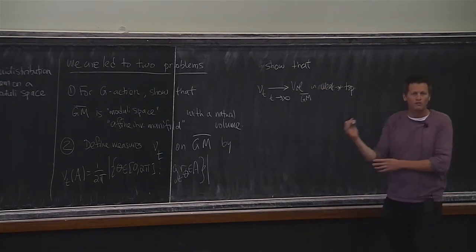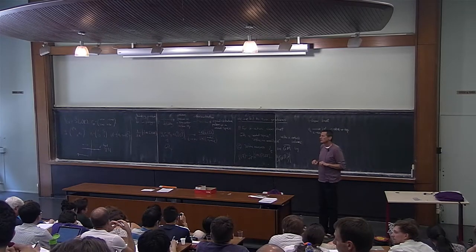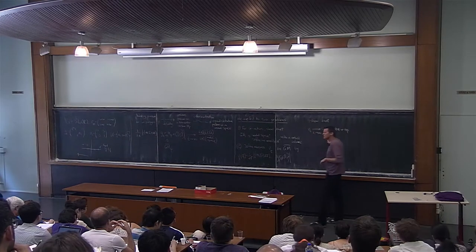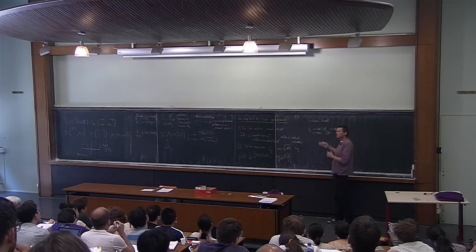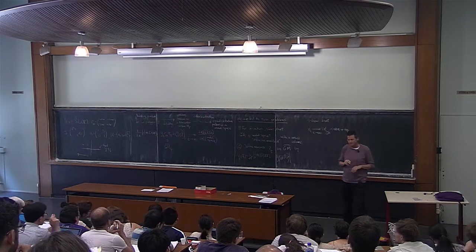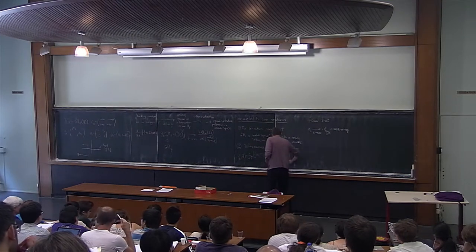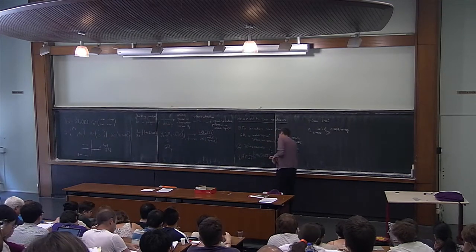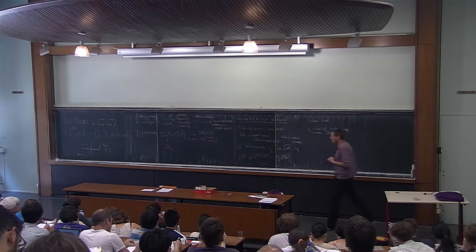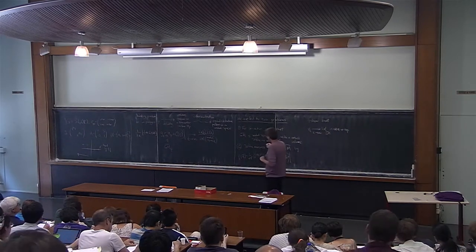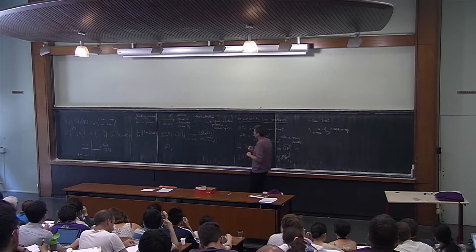This is a more general form of the problem. The weak-star topology means that if you integrate a continuous compactly supported function against mu_t, the limit of numbers equals the same integral with respect to the volume. You're sampling the measure along the circle centered at M. I want to discuss the relationship between problem two and the horocycle flow. Here's an exercise: show that any accumulation point of these circle averages is U-invariant.